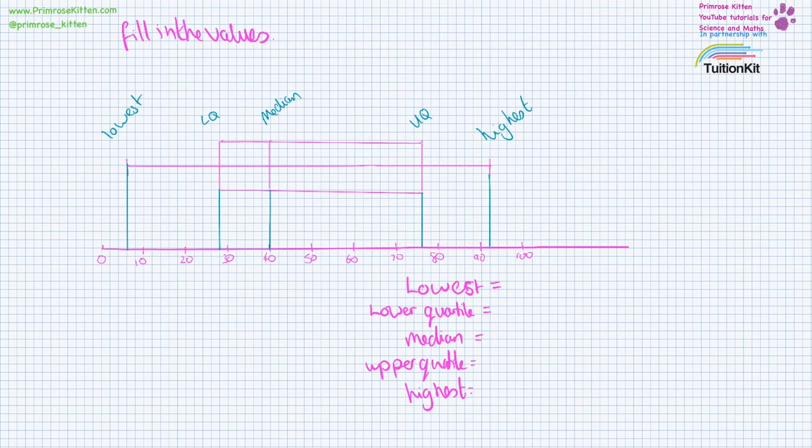And you'll notice on the scale that each block is equal to a value of 2 because 5 blocks is 10. So here we get up to 8. The lowest is 8.